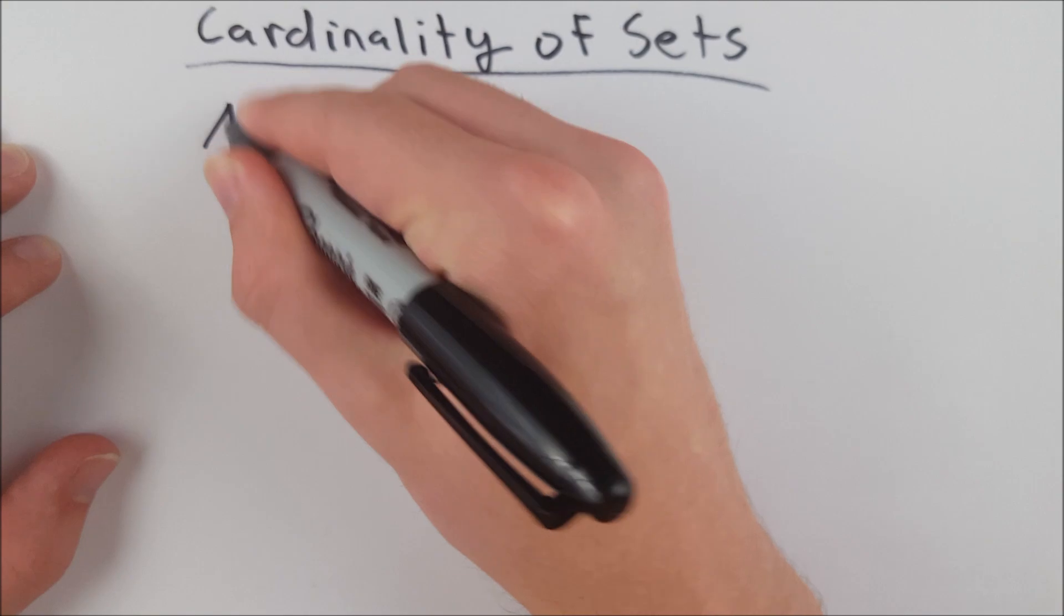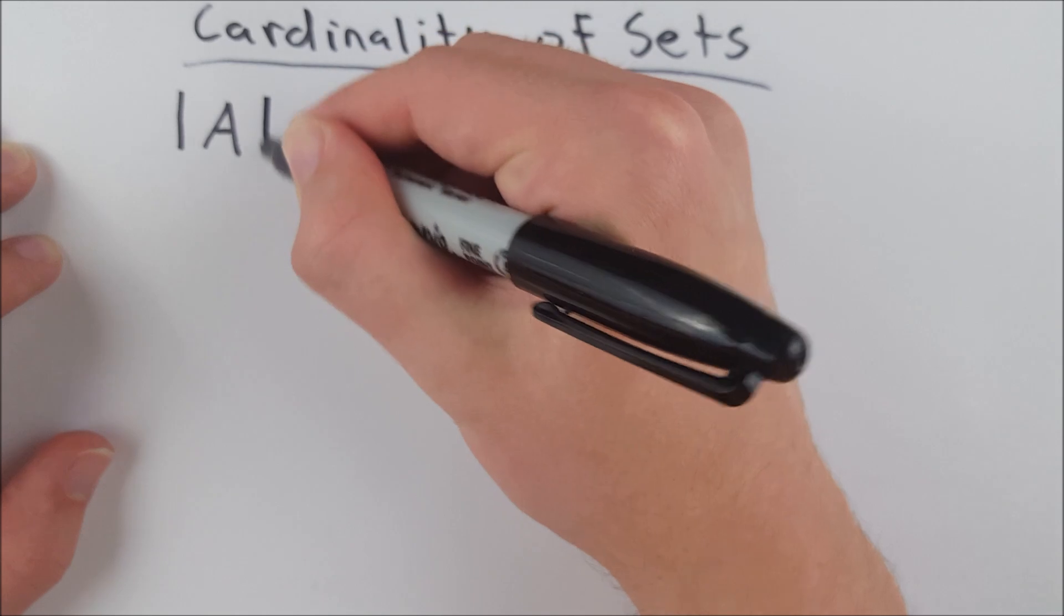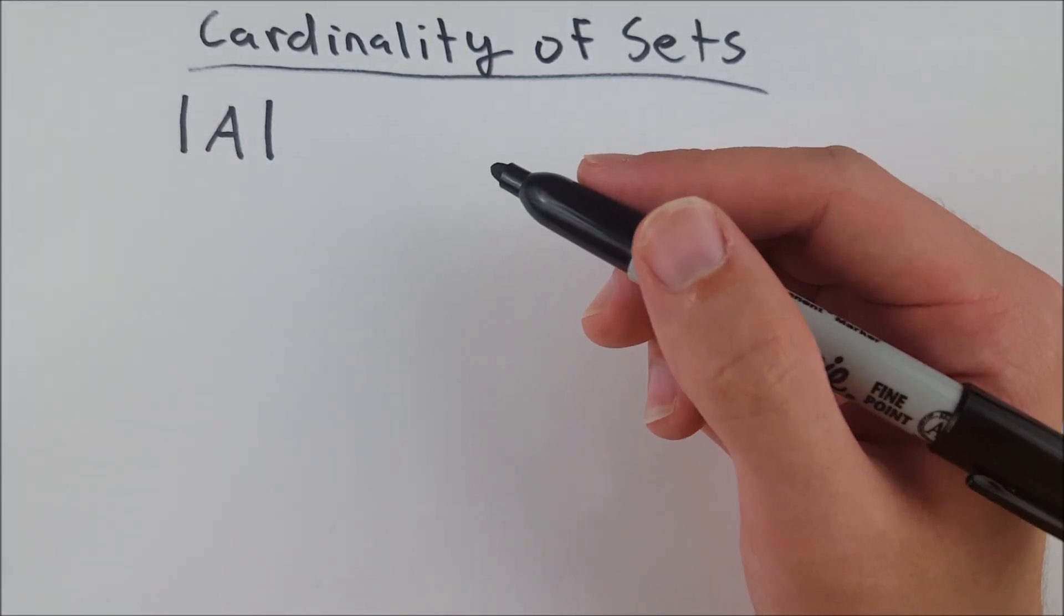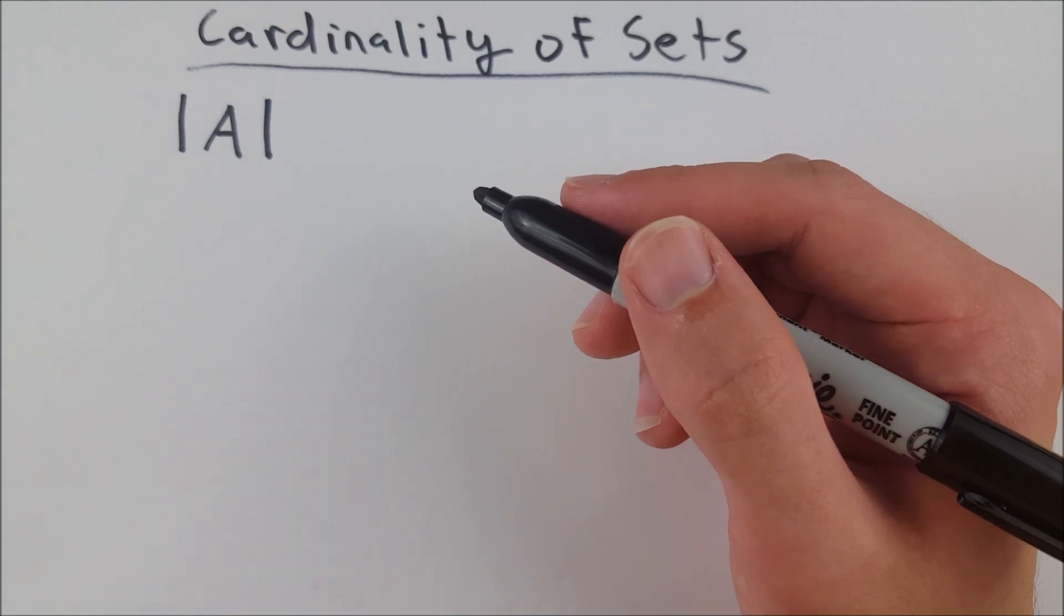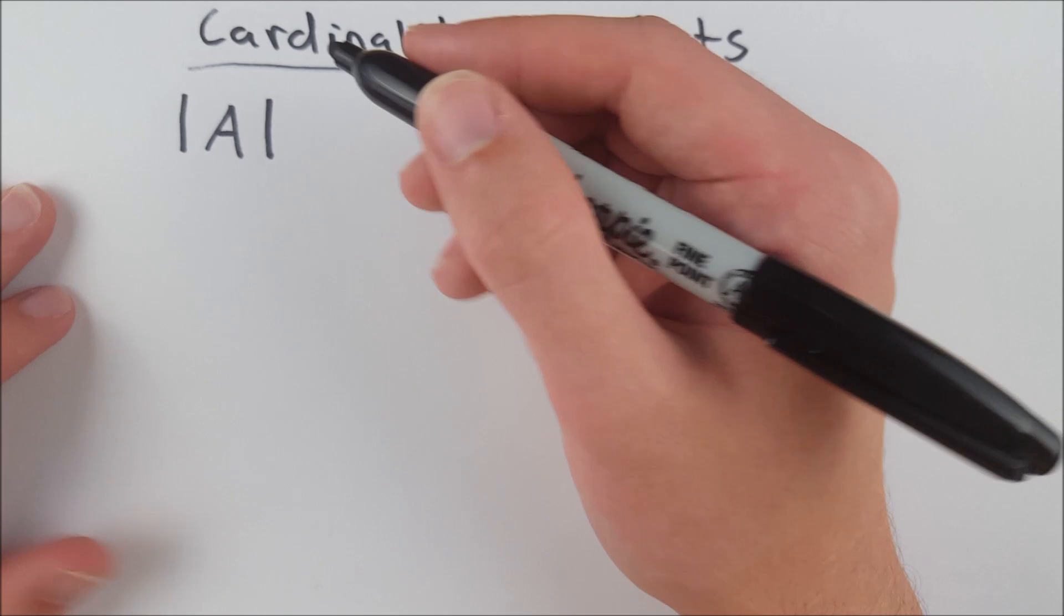If we have some set A, the cardinality of A is often written like this, with absolute value signs around A. The straight bars around something is often used as a measure of magnitude. So this is saying cardinality of A. And so what's that? What does that mean?